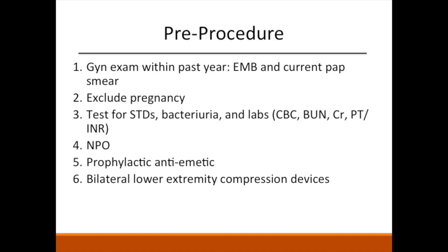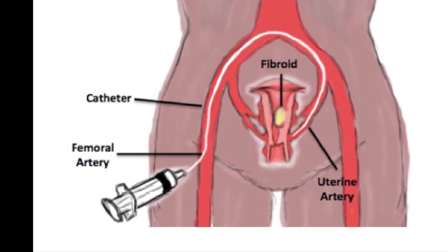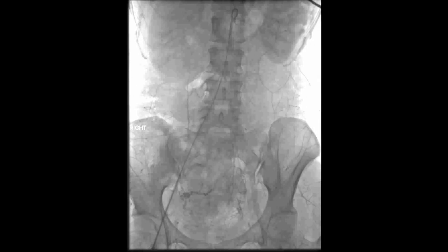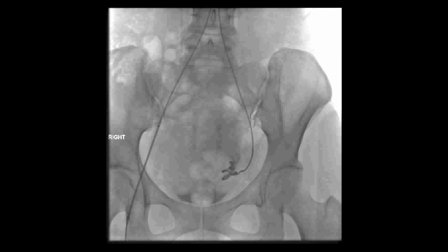The patient is NPO, and prophylactic bilateral compression devices and an anti-emetic agent like Ondansetron are administered. A Foley catheter is in place to prevent the bladder from overfilling with contrast and precluding view of the uterus. A small nick in the skin in the groin is made, and a catheter is inserted into the artery. The overall pelvic vasculature is then evaluated.